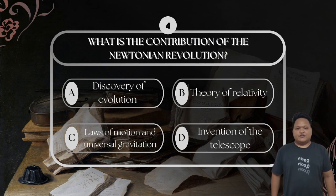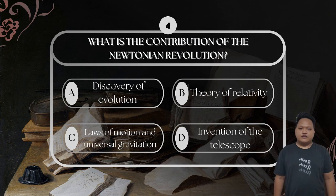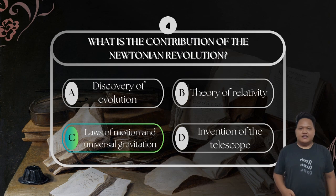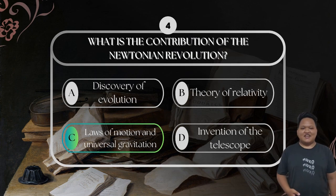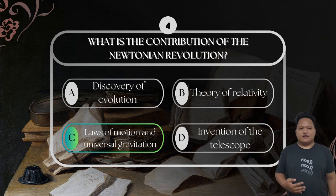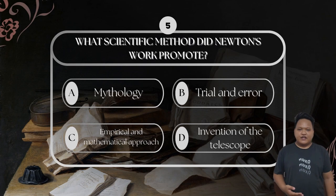For question number four: what is the contribution of the Newtonian Revolution? The correct answer is the laws of motion and universal gravitation. The Newtonian Revolution brought a clear understanding of physics laws, especially gravity and motion. Isaac Newton's work unified celestial and earthly physics under a single set of laws, changing how we understand movement, force, and the natural world.